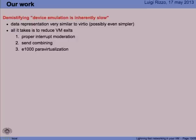One of the things we did was demystify the belief that device emulation is slow. Because once you look at a para-virtualized device, you see that the data representation — packet buffers, rings, etc. — is not too different from what you have in a physical NIC. What is different is the way you access registers, or the equivalent of registers, to get information on the current packet to transmit or the interrupt status. But that can be addressed without introducing a completely new device model.